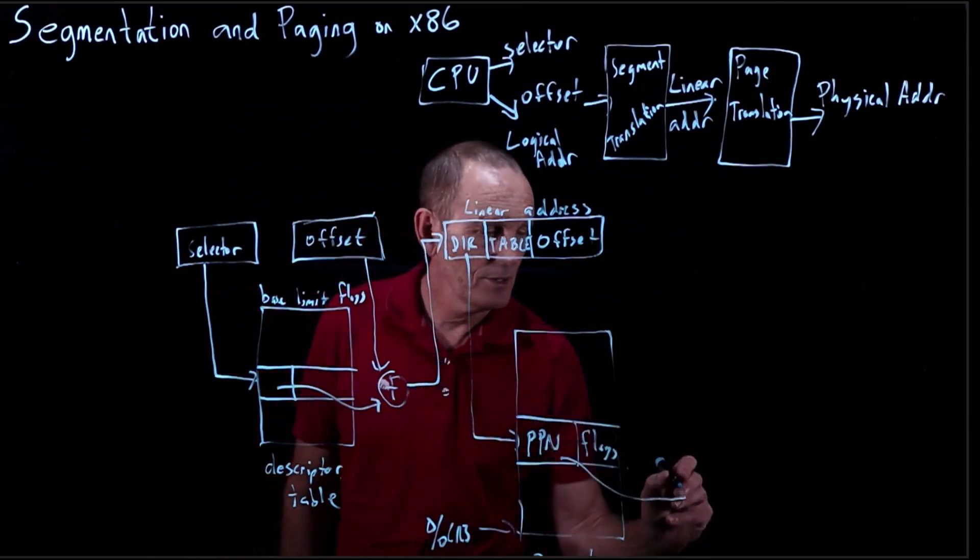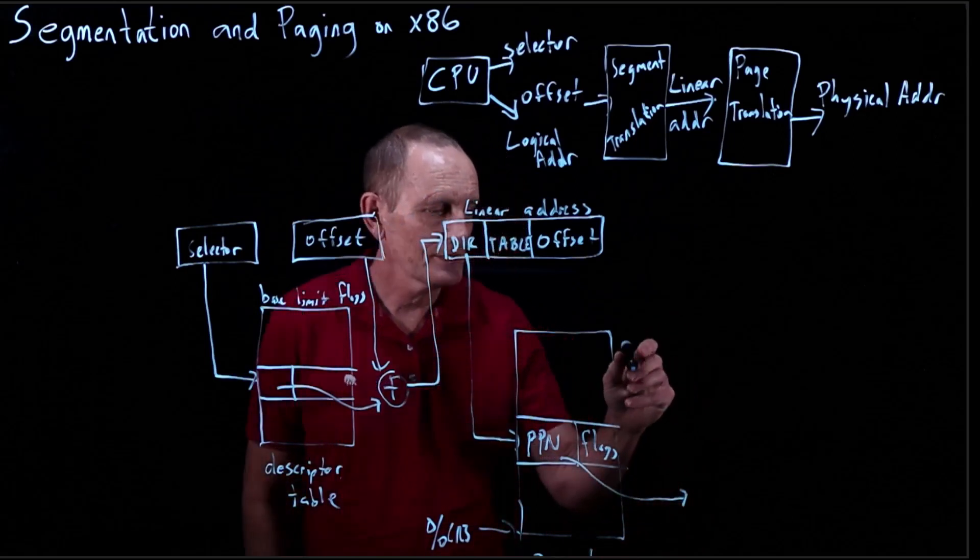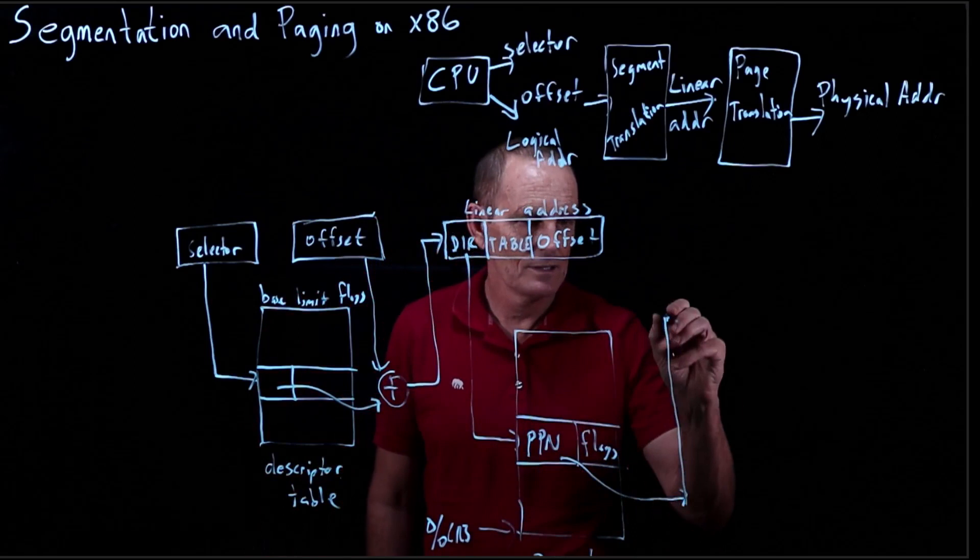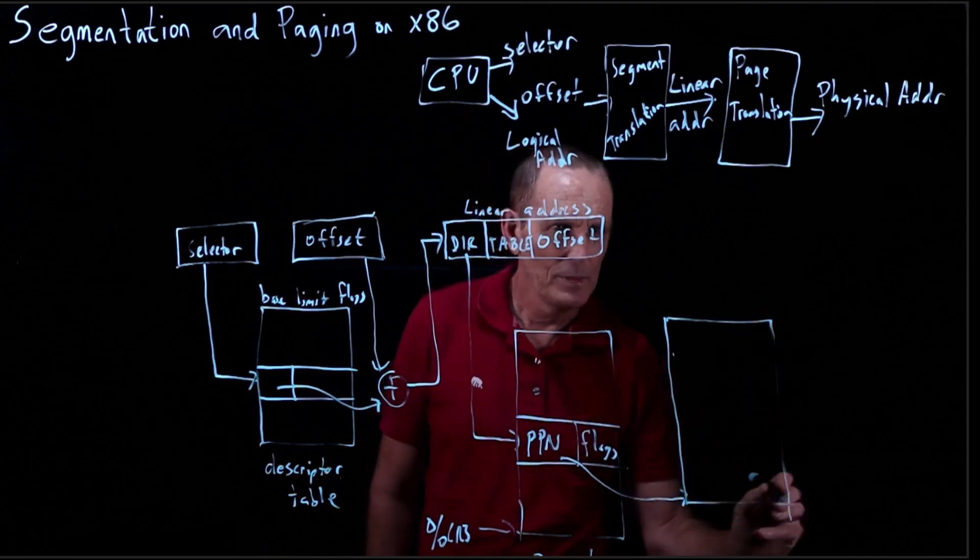The physical page number gives us the address, once we mask off these flags, of the index of the page table.